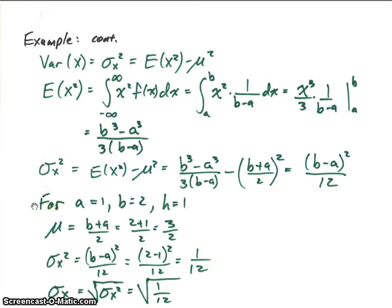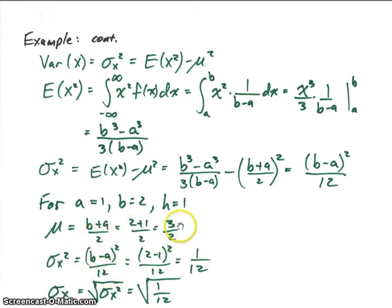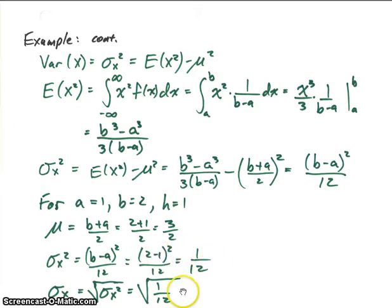Now let's plug in our specific values: a equals 1, b equals 2, and the height is 1, since our bolt goes from 1 to 2 inches. For the mean we get (1 plus 2) over 2 equals 3 halves. For the variance we get (2 minus 1) squared over 12 equals 1/12, and therefore the standard deviation is the square root of 1/12.